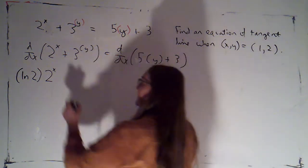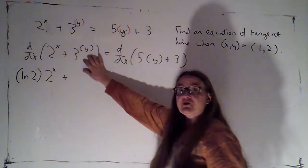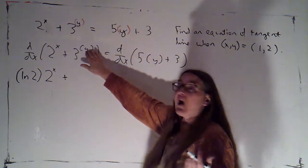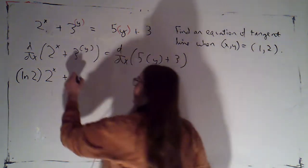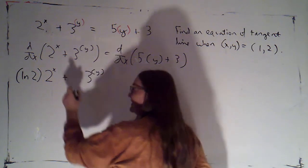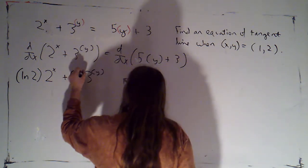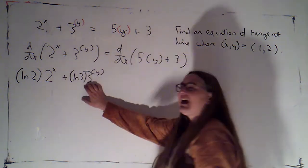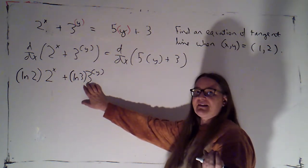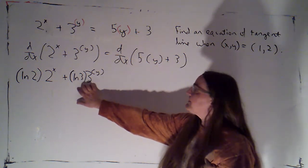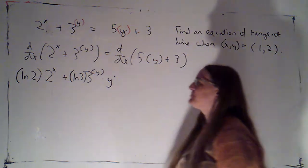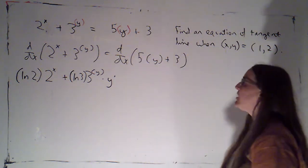Here, this is an exponential function, but it's an exponential function of y. So this is going to be chain rule because y is the inside part. So this will be that same exponential function, 3 to the y, multiplied by the natural log of 3. The constant that I multiply by is always the natural log of the base. That's just the derivative of the exponential part. Chain rule, multiply by the derivative of the inside part, which will be a y prime.